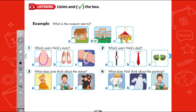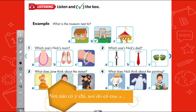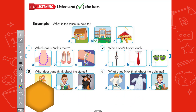Question 3: What does Jane think about the statue? What does Jane think about this statue? We have adjectives like pretty, interesting, ugly. Question 4: What does Nick think about the painting? It could be cute, scary, or interesting.